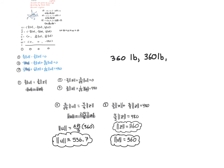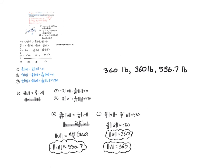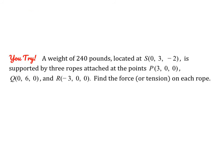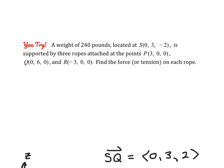That is our final answer. You could go back and match the magnitudes with each specific rope if asked which rope had which tension. Now pause the video and try the next problem. Follow the same process: make your unit vectors, multiply them by the tension, and set up your system.